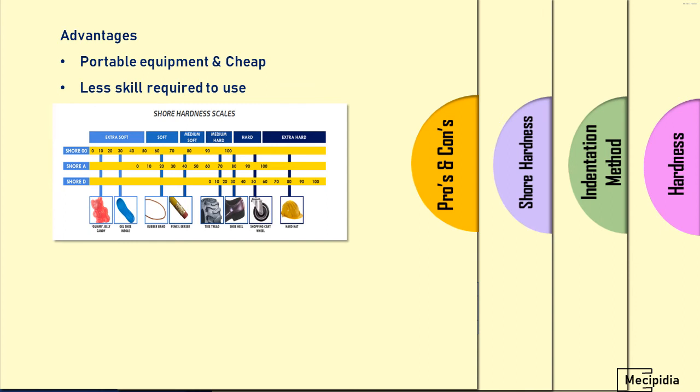cheap and less skill is required to use. As we studied, Shore A and Shore D hardness are widely used in automobile engineering and mechanical fields. As I said, 0 to 100 scale is followed in each category. Under the soft range, rubber bands and pencil erasers lie between Shore 20 and 40, and automobile tires come under Shore 70.